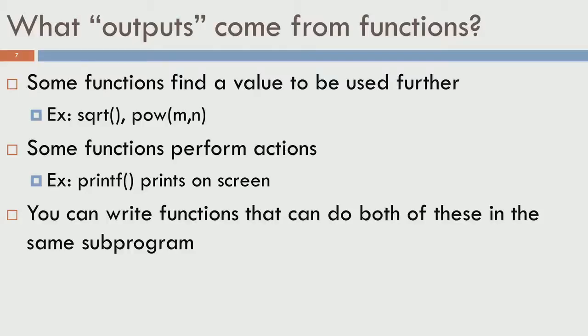If I give m and n, POW can do the action, but I want to use that result. For example, if I want to compute a squared plus b squared, I can call power of a and 2, but that a-squared value should be returned. There are also functions which do not return any useful values explicitly, but perform actions — for example, printf does something on the screen but does not return a useful value to the program where printf is called.